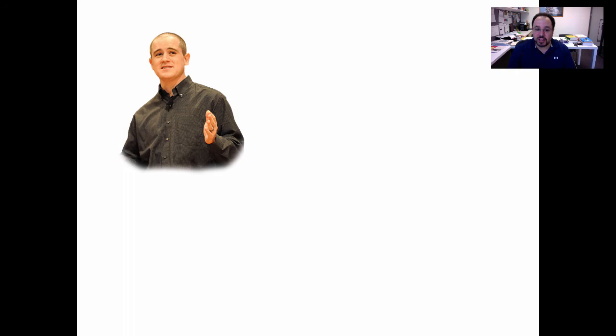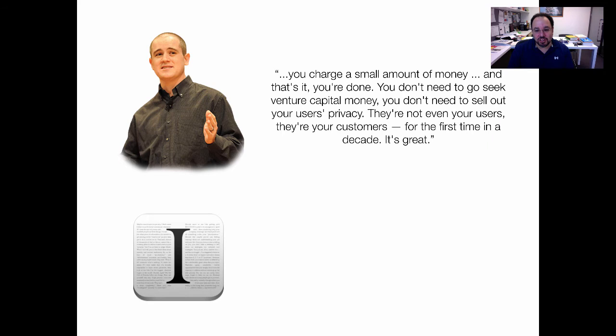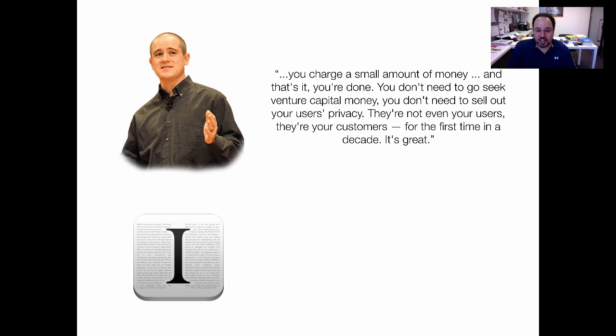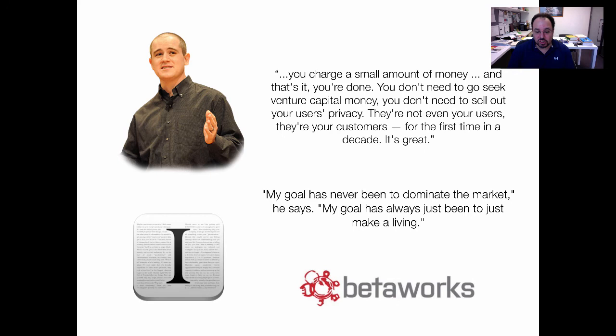Some startup firms do quite well on the execution route. Marco Arment, one of the founders of Tumblr, set up an app called Instapaper. One of his favorite lines was: 'You charge a small amount of money, and that's it, you're done. You don't need to seek venture capital money. You don't need to sell out users' privacy. They're customers for the first time in a decade — it's great. My goal has never been to dominate the market; my goal has just been to make a living.' That's what competing on execution looks like — make a good product, make sure it's the best product, and you don't have to dominate the whole market. It could actually be more profitable than the race to the top. Instapaper was later sold to B2Works.